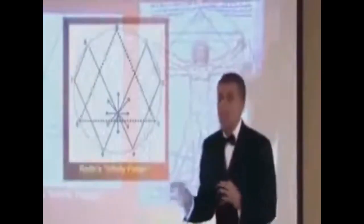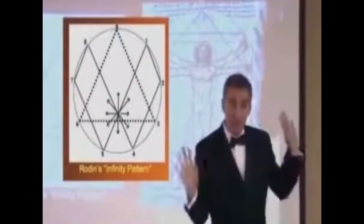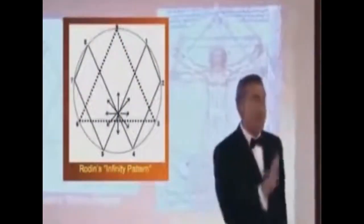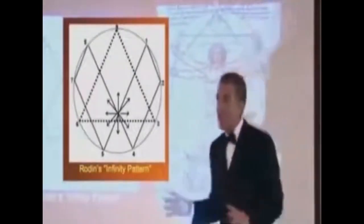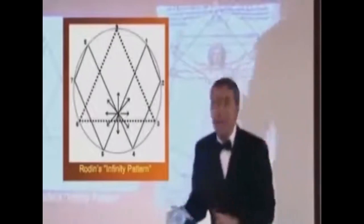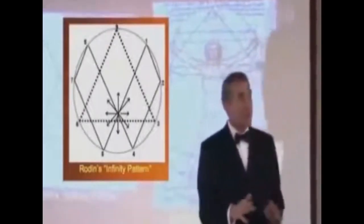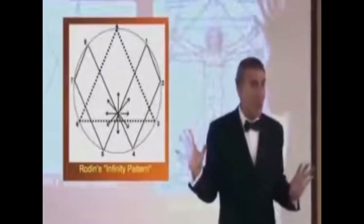In ancient mystery school Pythagorean mathematics, there's only nine numbers in the universe. Ten is actually one plus zero, that's one. Zeros are placeholders, a man-made creation. Creator's language is math. There's only nine numbers in the universe, one through nine.